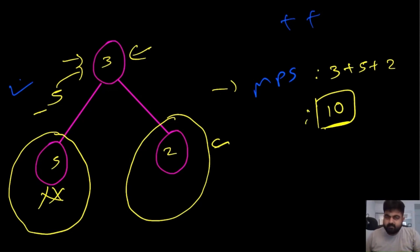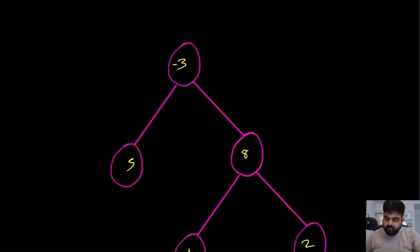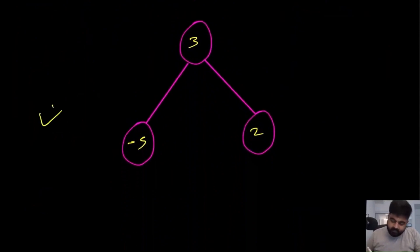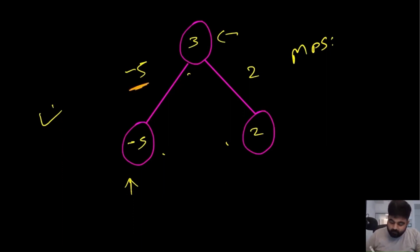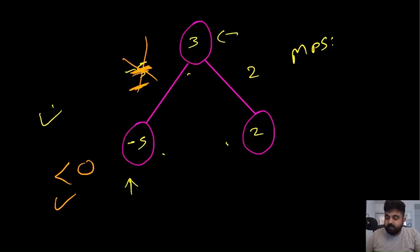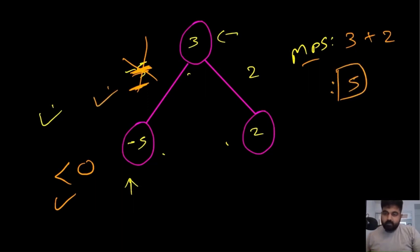Now for a tree with a negative value: the left subtree contributes minus 5, the right subtree contributes plus 2, and the root is 3. Maximum path sum using all nodes would actually be 0. Instead, whenever a contributed value is less than zero, we discard it. So we ignore the minus 5 and do 3 plus 2, giving answer 5. An important rule: whenever we see negative values contributing, we ignore them from our maximum path sum calculation.